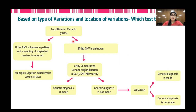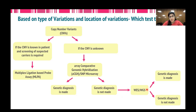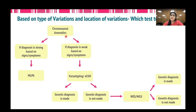In case of copy number variations, if a CNV is known in the patient and screening of suspected carriers is required, MLPA can be the best choice. If the CNV is unknown and you want to check where all CNVs are present in the entire genome, array CGH and SNP microarray can be used. If genetic diagnosis is not made, one can again go to WES and WGS-based genetic testing. In case of chromosomal anomalies, if the diagnosis is strong based on signs and symptoms, one can directly go for MLPA. If the diagnosis is weak, broader techniques like karyotyping or array CGH can be used. If diagnosis is still not made, one can try WES and WGS-based approaches.